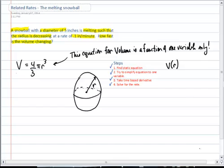Hopefully you came up with this conclusion, that this function for volume is only a function of one variable only. It's only a function of radius. So now the next step would be to take a time-based derivative of this equation.